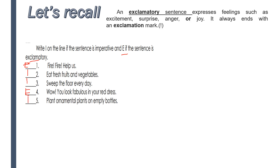Let's have a quick review. What is an exclamatory sentence? It expresses feelings — excitement, surprise, anger, or joy. It always ends with an exclamation mark. For example: 'Fire!' — exclamation mark. Another example: 'Wow! You look fabulous in your red dress!' This is an example of an exclamatory sentence.